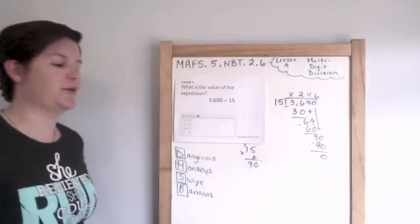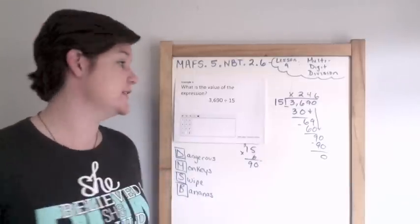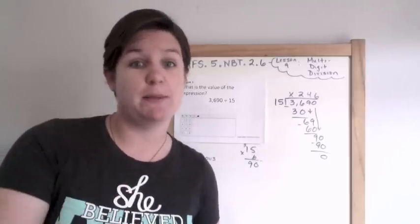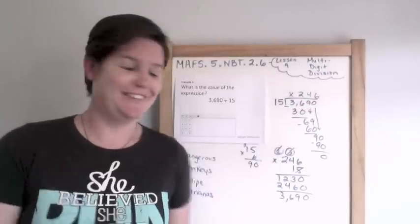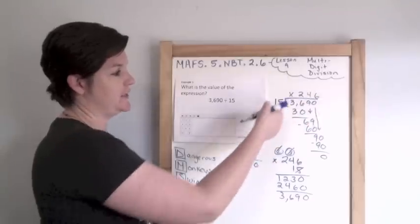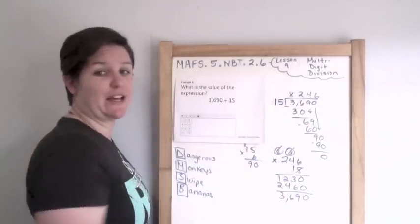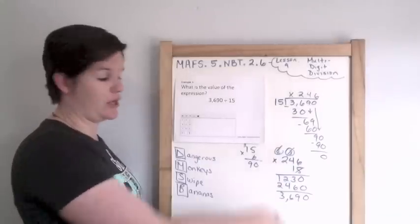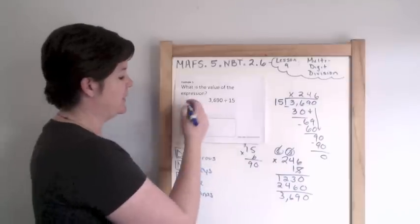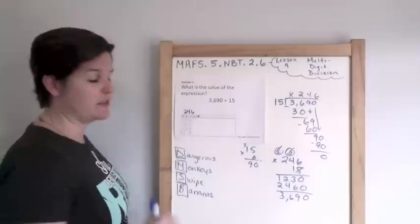Then we subtract and we get zero. Now you could use multiplication to check this answer. I checked my work, I calculated 246 times 15, I got 3,690. My answer that goes inside the box is 246. For you this would be an equation editor, so you would go 2-4-6, move on.